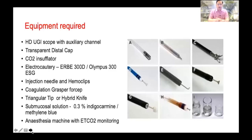What equipment is required? High-definition upper GI endoscopy with a working channel fitted with a transparent distal cap should be used. This procedure is done under complete CO2 insufflation to prevent air-related complications. A high-end electrocautery unit like ERBE VIO 300D or Olympus ESG should be used. Injection needles are used to make a mucosal bleb and hemoclips are used to close the mucosal incision.